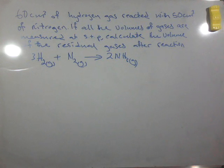So based on this, we have a question on the board. It says that 60 cm³ of hydrogen gas reacted with 50 cm³ of nitrogen. If all the volumes of gases are measured at STP, calculate the volume of the residual gases after reaction.